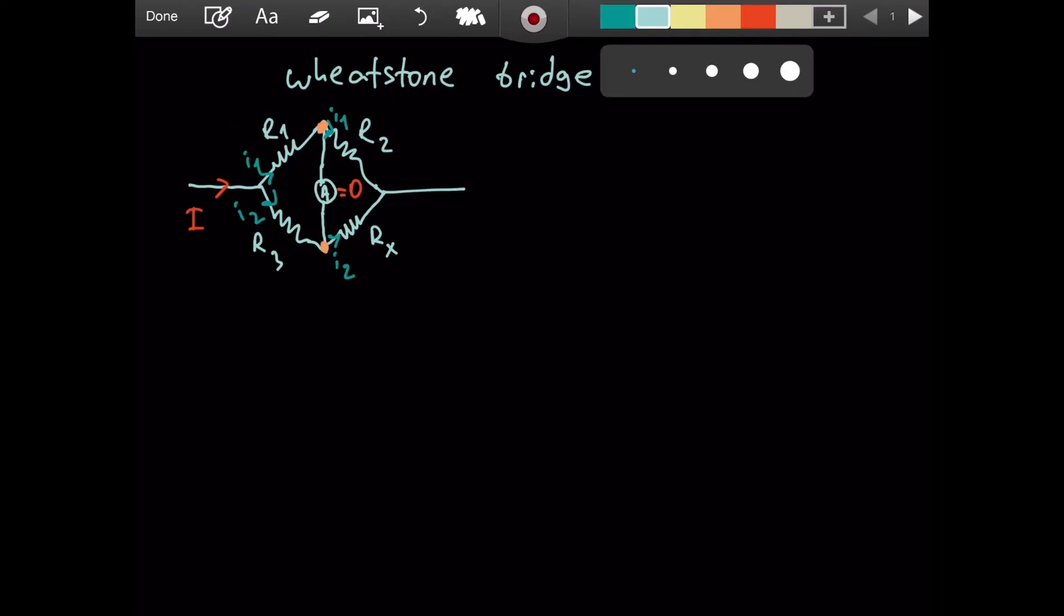We have I1 R1 equaling I2 R3. We also see that the voltage across here and across this resistor, they are also the same.